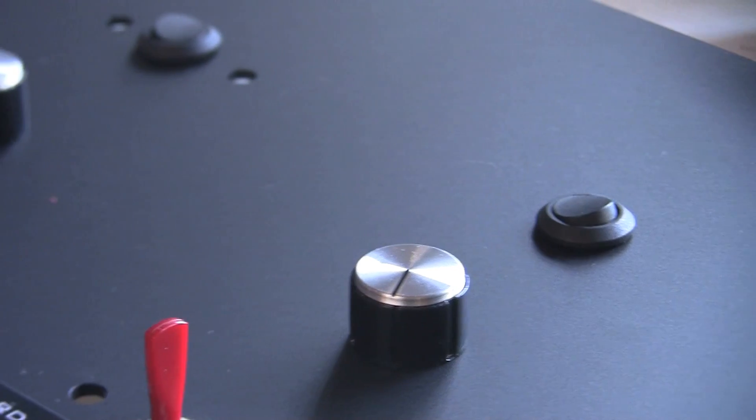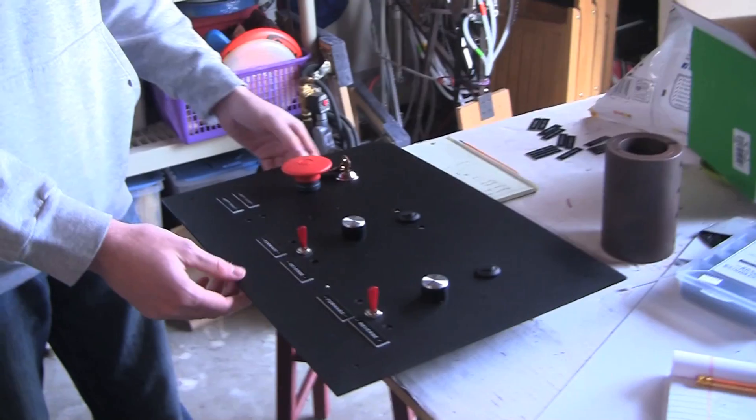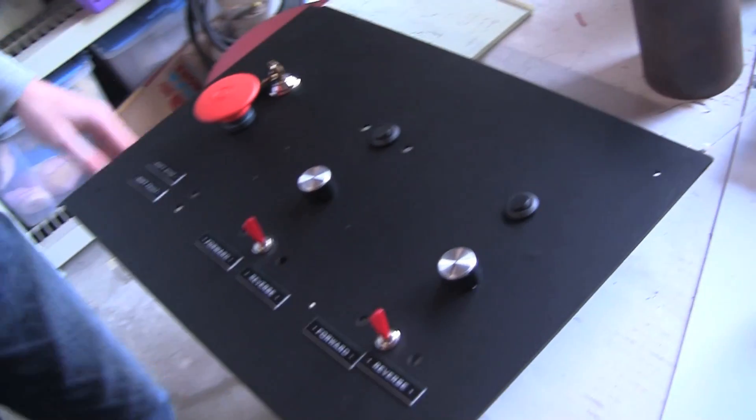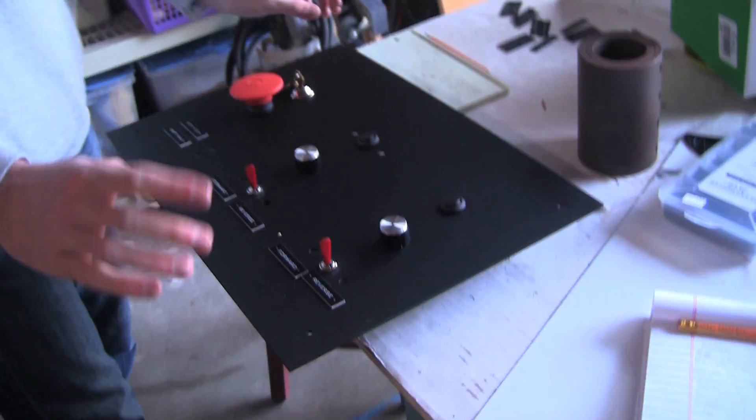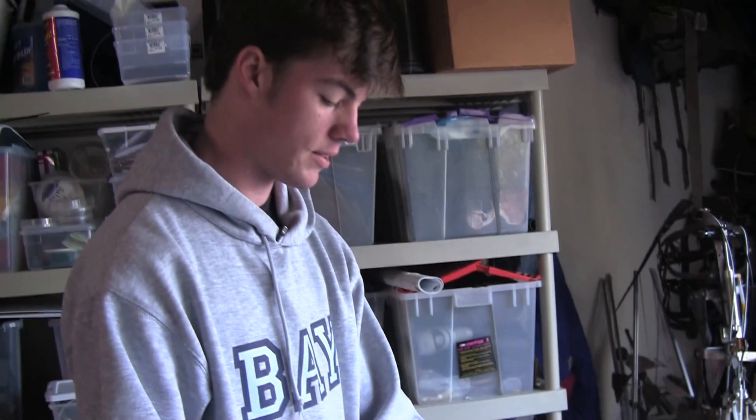Okay, so this is the control panel for the Viper. There are a couple of important things this has to do. This is our master power. This controls power to the whole platform and this is a key switch.